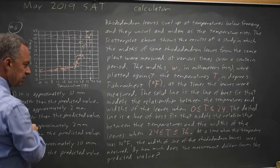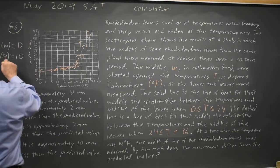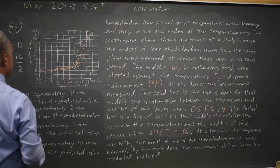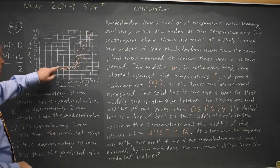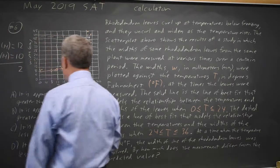And the difference, by how much does the measurement differ from predicted? 12 minus 10 is positive 2, and the measurement is greater than predicted because the measurement we see is above the line of best fit.